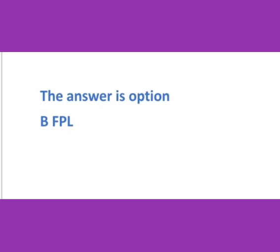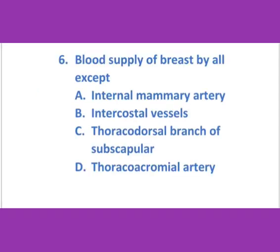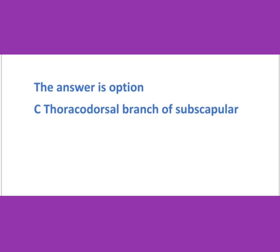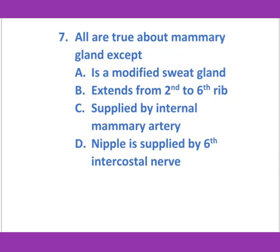Blood supply of the breast by all except — (a) internal mammary artery, (b) intercostal vessels, (c) thoracodorsal branch of subscapular, (d) thoracoacromial artery. The answer is option C: thoracodorsal branch of subscapular.